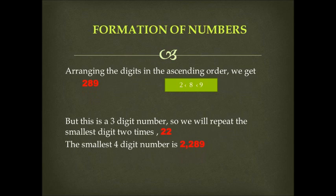For building the smallest number, we will arrange the digits in the ascending order and we will get 2, 8, 9. Clearly, 2 is less than 8, which is less than 9. But this is a three-digit number. So we will repeat the smallest digit two times. In this case, the smallest digit is 2, so we will repeat it two times and we will get 22.